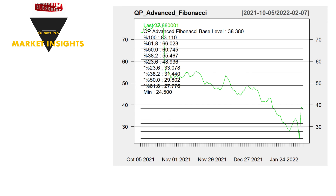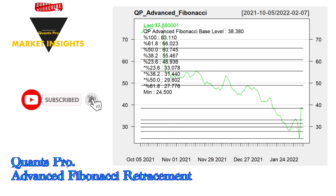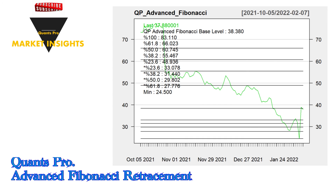The volatile movements caused by uncertainty in the markets require updating many technical analysis indicators and even lead to the use of new, academically-based techniques. In response, Quants Pro presents the QP Advanced Fibonacci Retracement, prepared specifically for the stock. This tool captures signals that cannot be captured by classical or conventional Fibonacci analysis. It leads algorithmic and systematic traders to determine take-profit or stop-loss levels more accurately. Traders who know QP Advanced Fibonacci levels have a serious advantage over those using the classical Fibonacci scale.